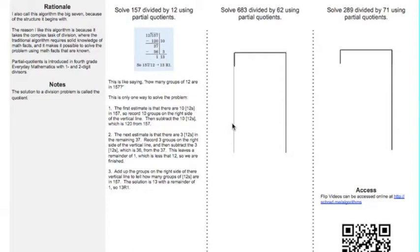So, let's talk about what this looks like. If I have 157 divided by 12, that's like saying how many groups of 12 are in 157. There's one way to solve the problem. The reason I like this is because every student's answer will be the same, but their path to get there could be totally different.